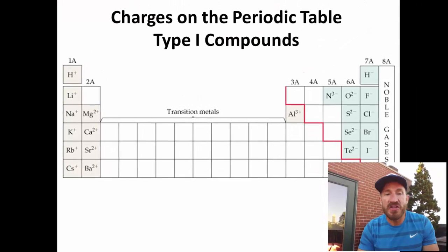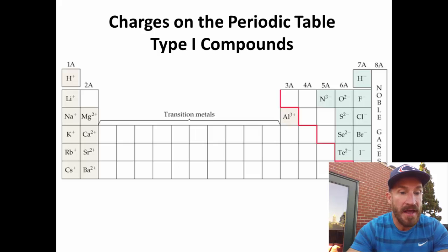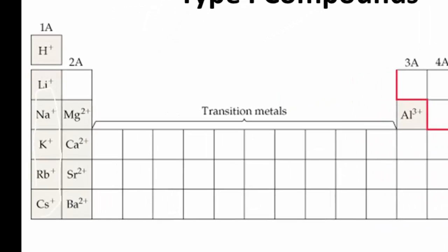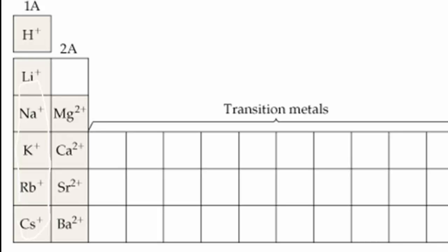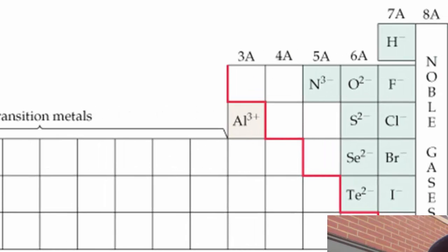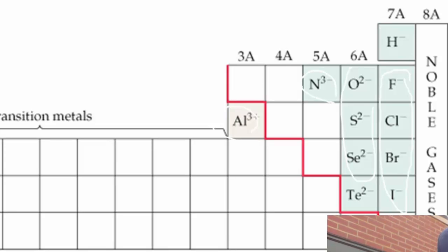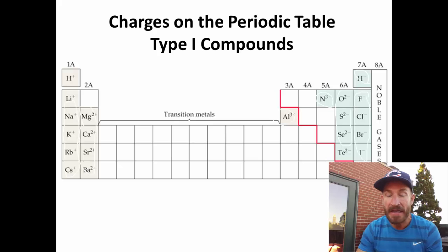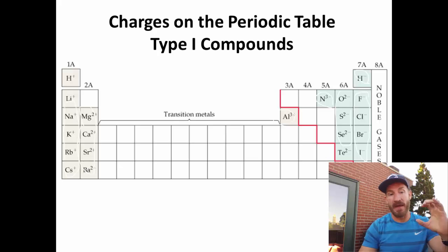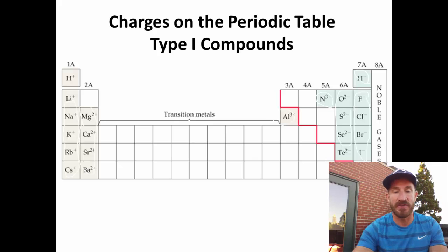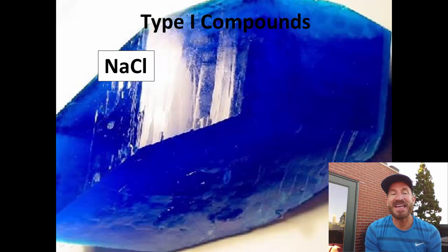One thing you should know and memorize are the charges on the periodic table. The charges of everything in family 1A — lithium, sodium, potassium, rubidium, cesium — are all plus one. Family 2A — magnesium, calcium, strontium, barium — are all plus two. Aluminum is plus three. Noble gases are not listed because they have zero charge and are typically not involved in ionic bonding. Fluorine, chlorine, bromine, and iodine are all minus one. Oxygen is minus two. Nitrogen is minus three. Hydrogen is plus one — the only time hydrogen is minus one is when it's with a metal in a compound.